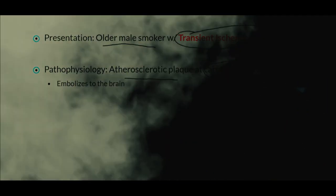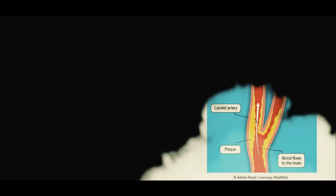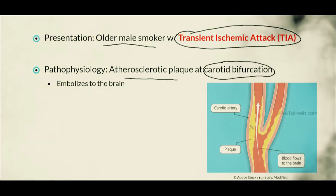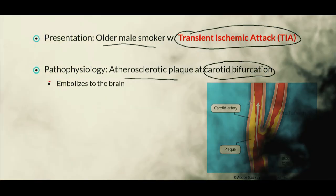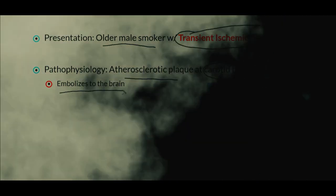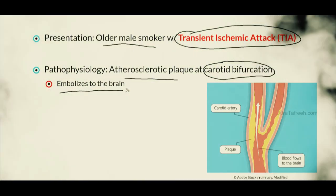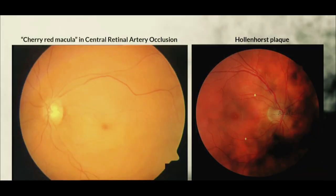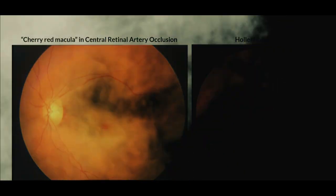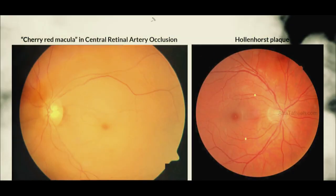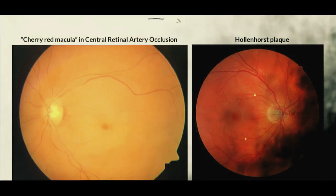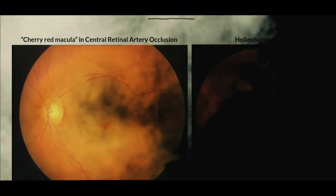Because we have this atherosclerotic plaque that is present here, it can ultimately break off and embolize to the brain, thus resulting in a TIA or stroke.